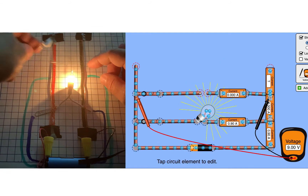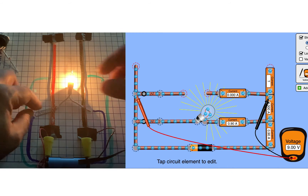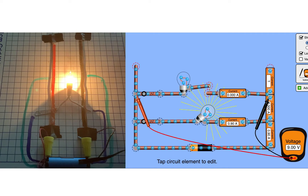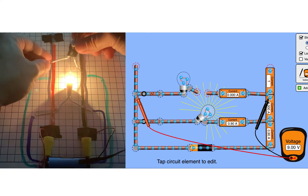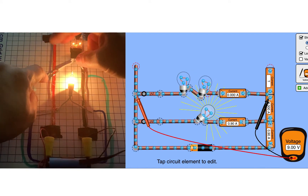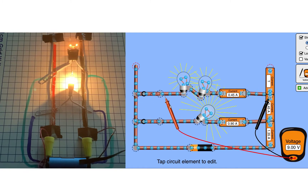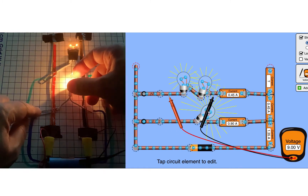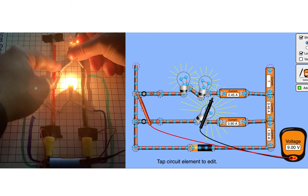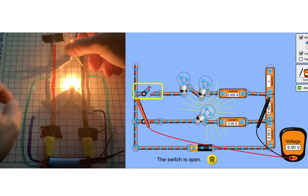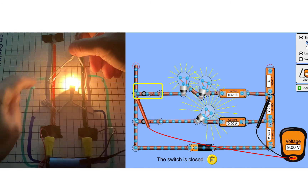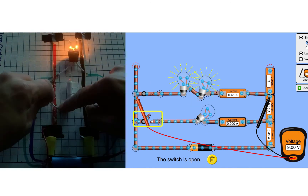Now I'm going to take the second bulb out and replace it with two bulbs. These two bulbs will be in parallel with the first bulb but in series with each other, since they are along the same loop together. Remember, all we're doing is adding series loops and connecting them to the same voltage source. Pay attention to all the values as I toggle the switches to turn the two bulbs off and then the first bulb off — does that affect the other loop?